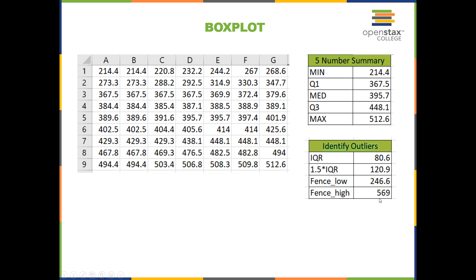To get the high fence, take the 1.5 times IQR value of 120.9 and add it to the third quartile: 448.1 plus 120.9 equals 569.